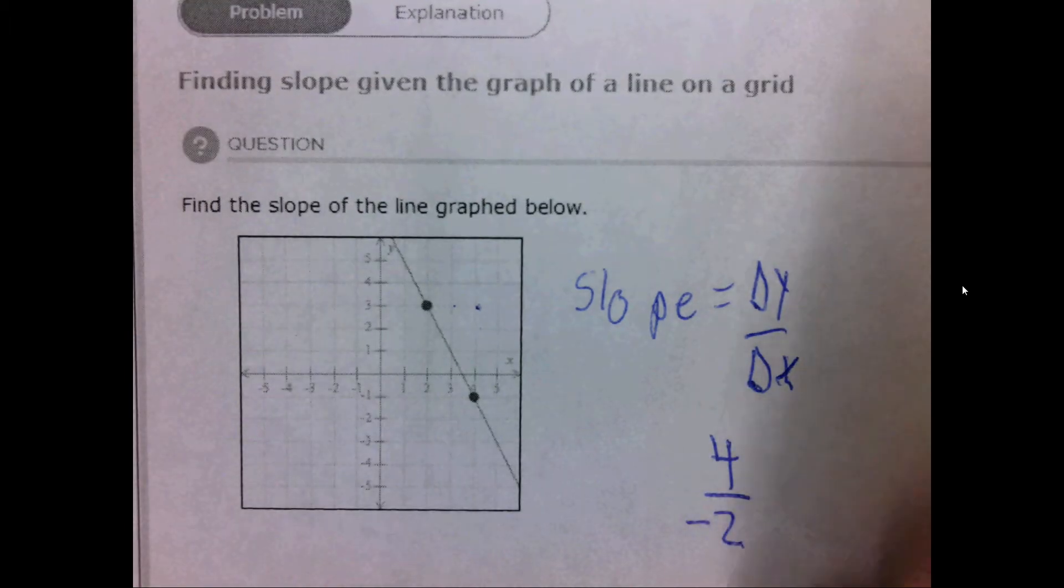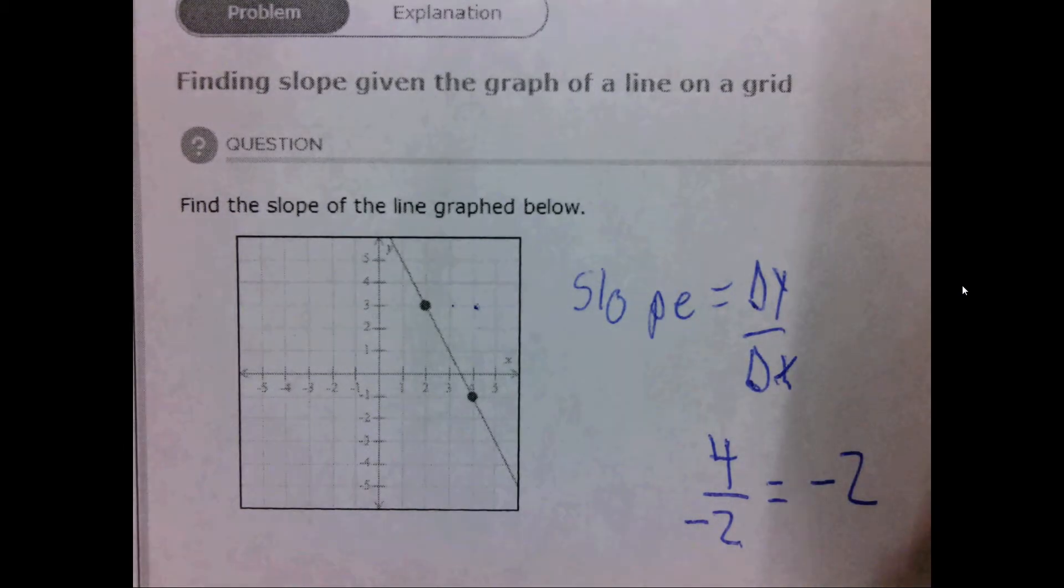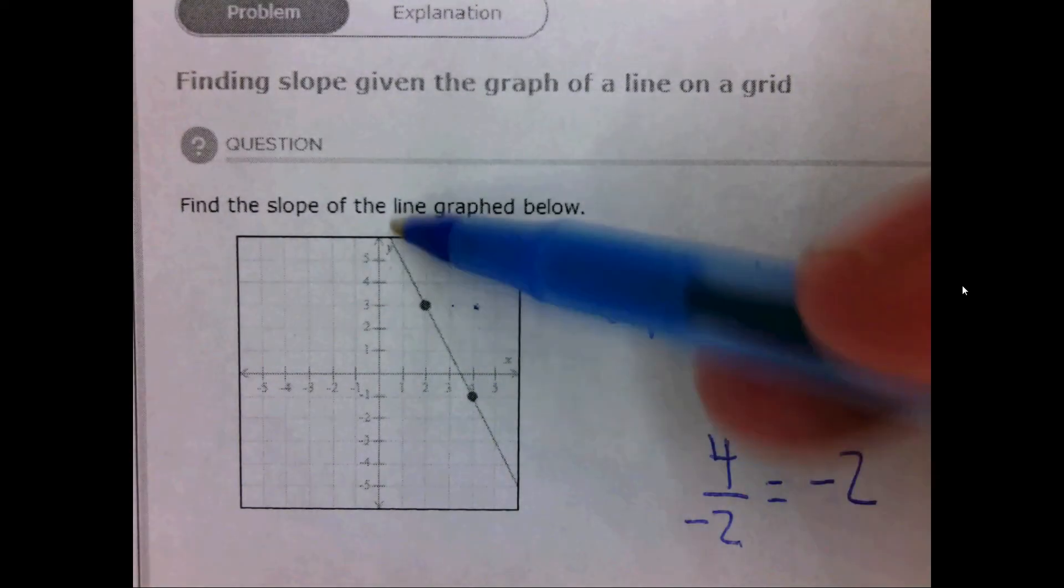To simplify this fraction we can write this as minus 2. Therefore the slope of this line is negative 2. It makes sense that this line has a negative slope because as you move from left to right the line goes down.